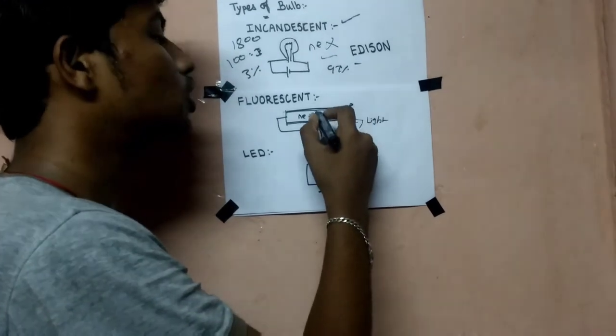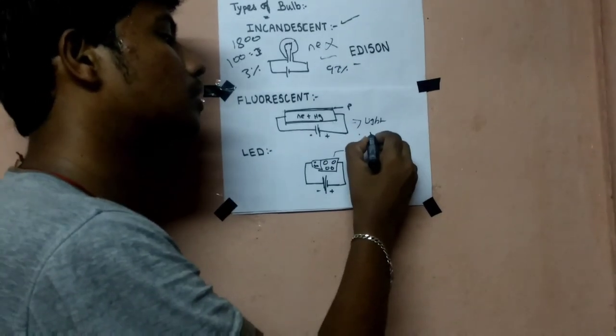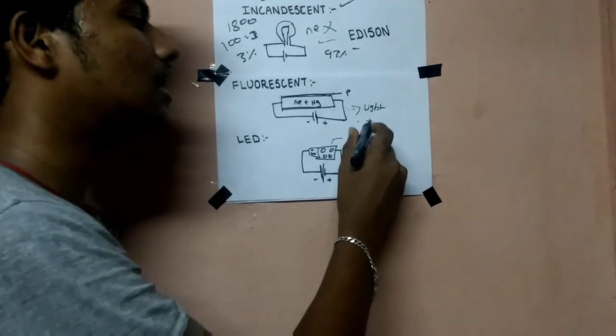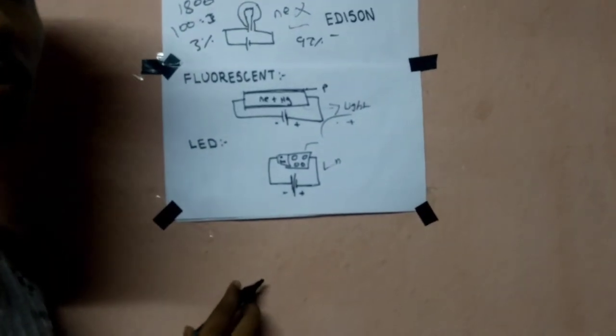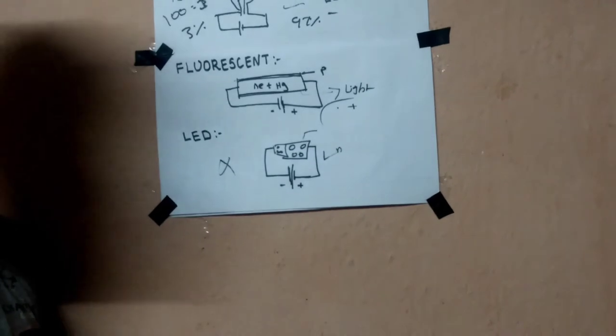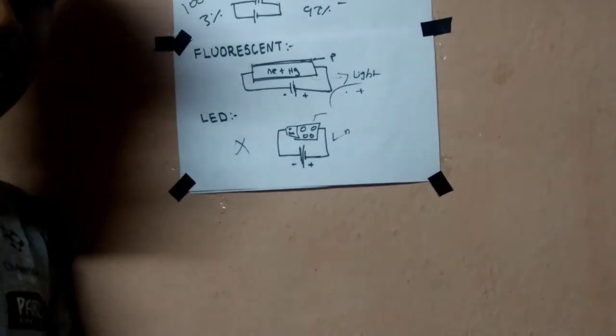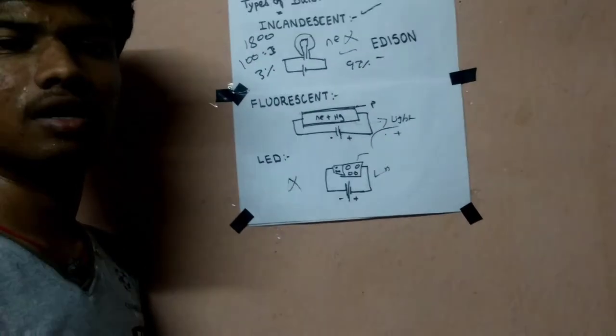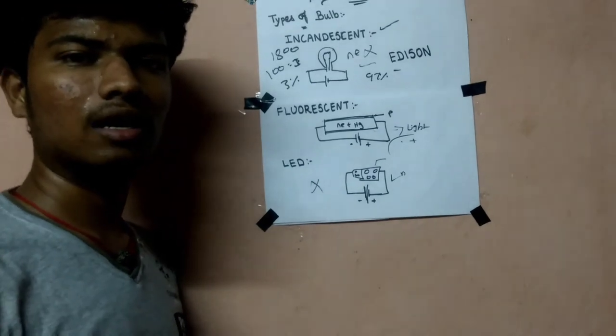So this LED is not toxic, but in the fluorescent bulb, mercury is toxic to human beings, so we need to handle it carefully. That's why LED is better. If you like this channel, please subscribe. We will see you with daily updates. Thank you.